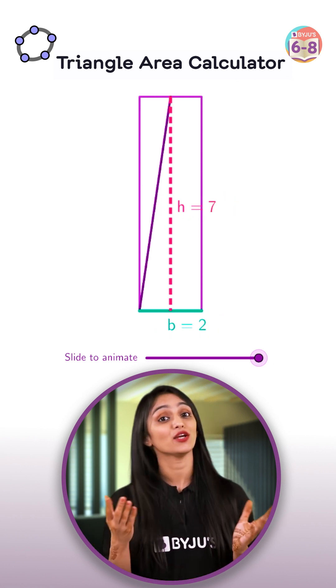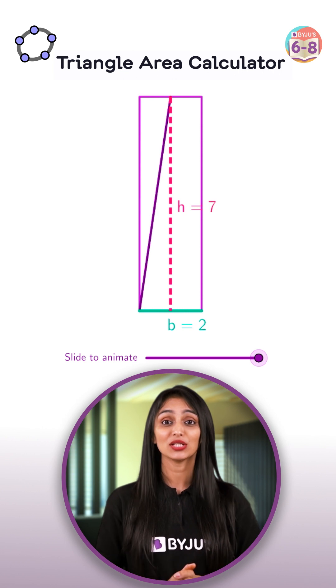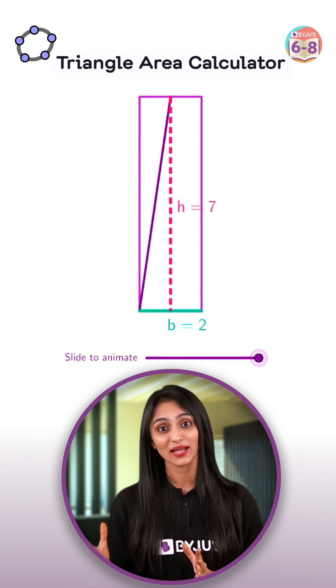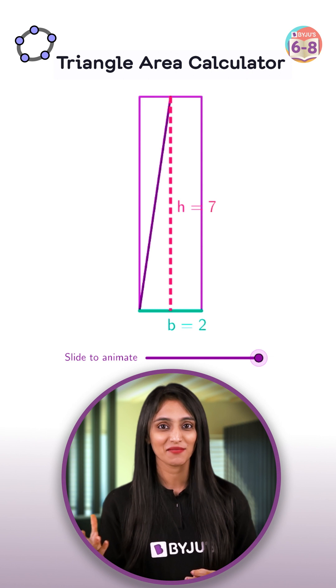And we all know that area of rectangle equals length times its breadth. So area of the given rectangle is going to be 2 times 7.